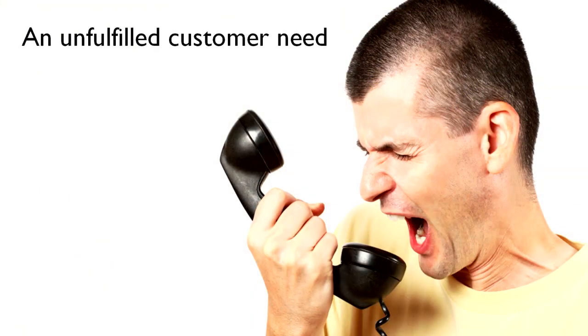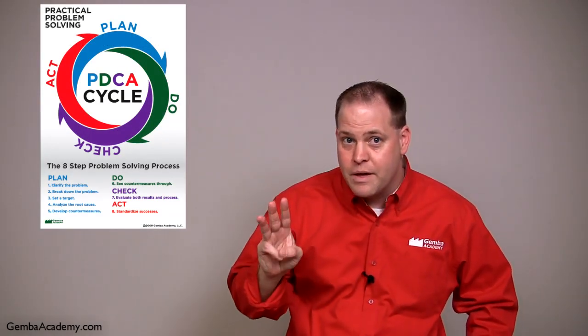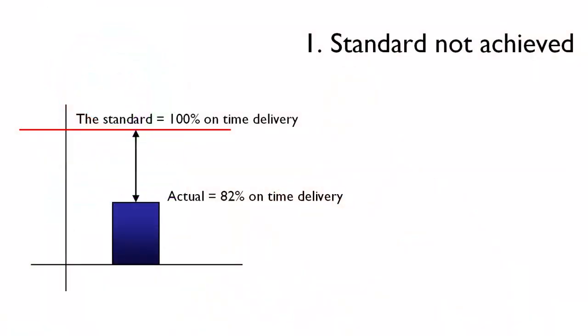Taking it a bit further, we're often able to classify problems into one of three types. The first is when the standard is not achieved. In other words, if our target is 100% on-time delivery and we experience a month of 82% on-time delivery, our actual performance doesn't meet the standard.